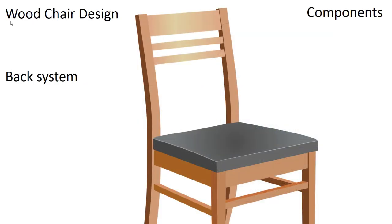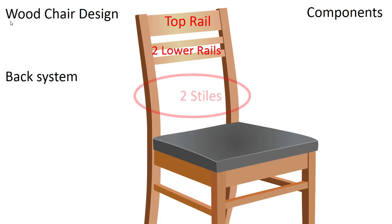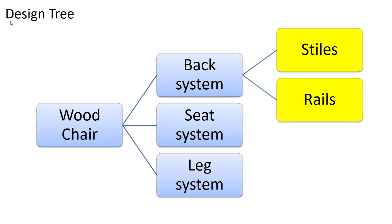Let's dive deeper into the back system and look at what the components are. The back consists of some rails — a top rail and two lower rails in this current configuration — and two styles. Notice the styles actually go all the way down to the floor, so we're going to keep track of the functions they have to perform not only at the back area but also down at the floor. Our design tree now includes the components in the back system.